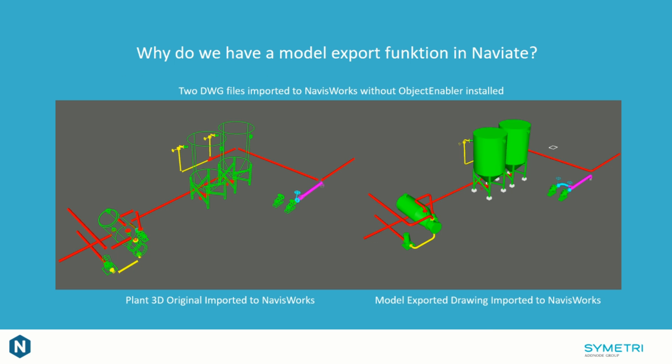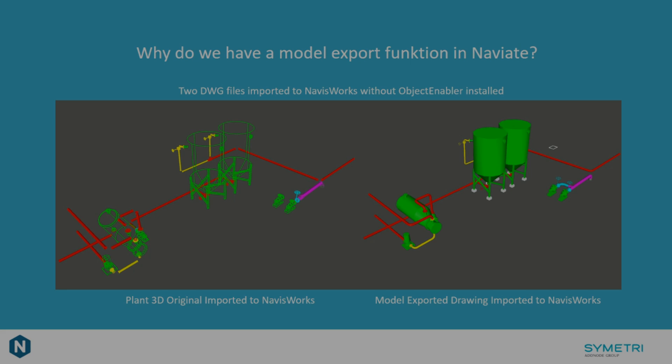Here to the left we have the original Plant 3D drawing imported to Navisworks without Object Enabler installed. And to the right we have the model exported DWG file imported to the same Navisworks without Object Enabler.